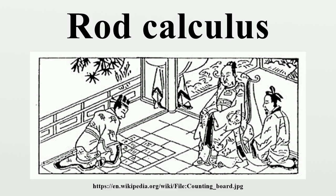Subtraction of fractions: eight-ninths minus one-fifth. Put numerators 1 and 8 on the left side and denominators 5 and 9 on the right. Cross-multiply: 1 times 9 equals 9, and 5 times 8 equals 40; replace the corresponding numerators. Multiply the denominators: 5 times 9 equals 45, placed at bottom right. Subtract: 40 minus 9 equals 31, placed on top right. Result: eight-ninths minus one-fifth equals thirty-one forty-fifths.